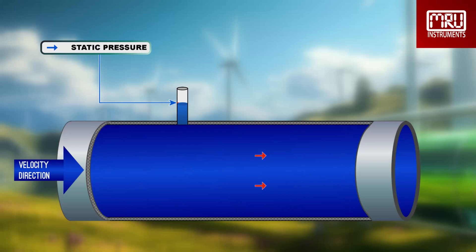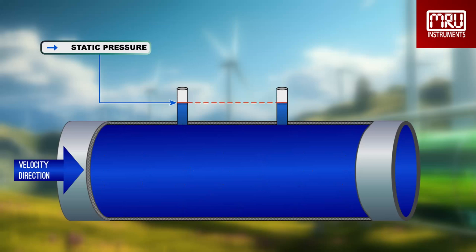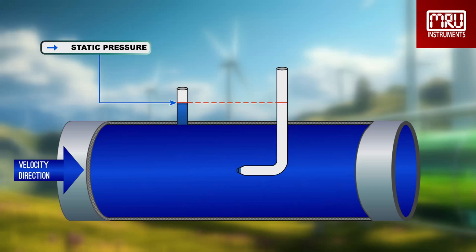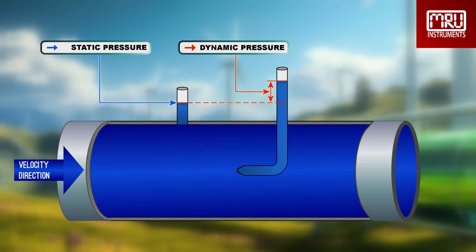The flow inside the tube is dynamic. When adding an additional piezometric tube at a different location, the height of the liquid will be the same, considering the flow is steady and incompressible. When replacing one piezometric tube with a simple pitot tube, a rise of the fluid column can be observed. This extra height is known as dynamic pressure.